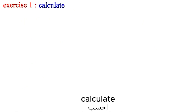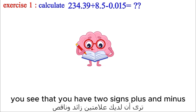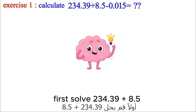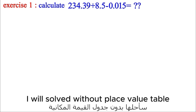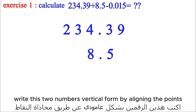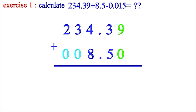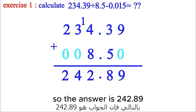First question: Calculate 234.39 plus 8.5 minus 0.015. Since you have two different signs, don't put all three numbers vertically together. First solve 234.39 plus 8.5, then subtract 0.015 from the answer. Writing vertically and aligning the dots: 9 plus 0 is 9, 3 plus 5 is 8, put the dot, 4 plus 8 is 12 so carry 1, 1 plus 3 plus 0 is 4, 2 plus 0 is 2. The answer is 242.89.